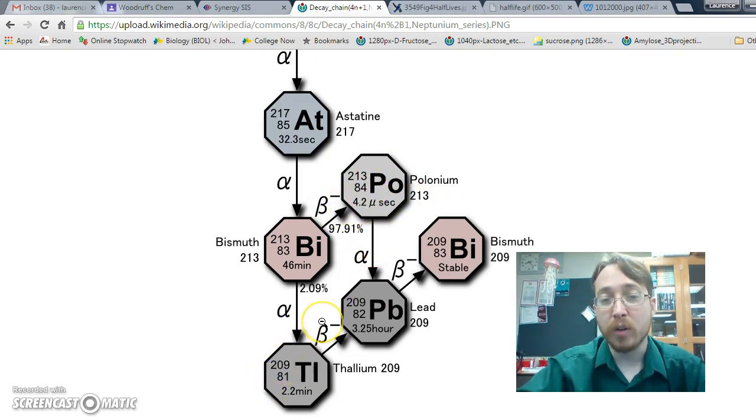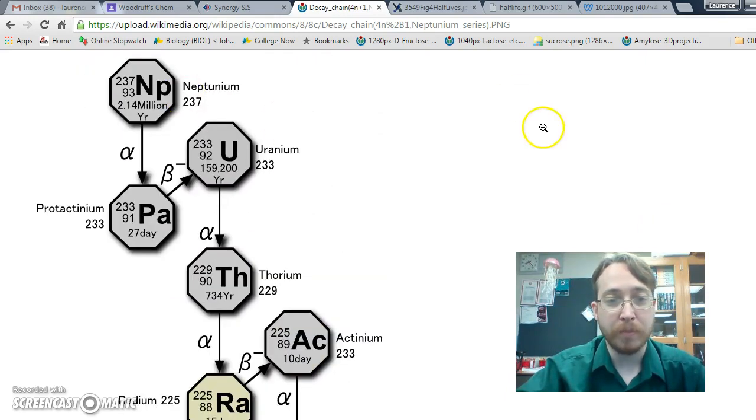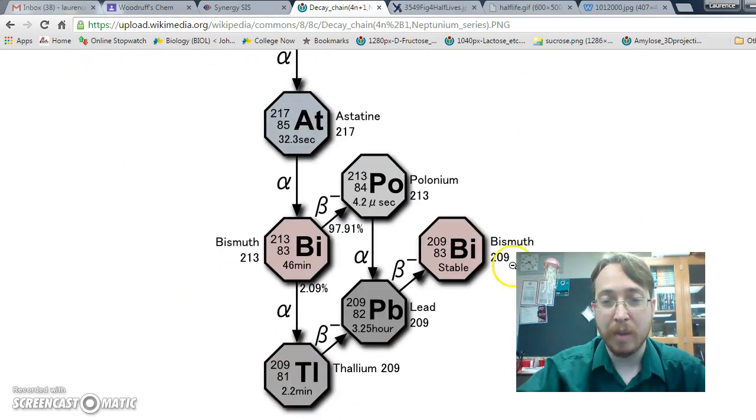But both of the forks converge because polonium can undergo alpha decay to become lead-209, and thallium can undergo beta decay to become lead-209. So they split apart, but they remet each other at this lead, which can undergo beta decay to get to a finally stable bismuth. So this long series of decay that it takes to go from our neptunium to our stable bismuth—this is a decay chain.